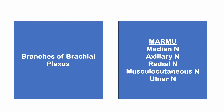Branches of brachial plexus — there are five terminal branches of the brachial plexus, remembered as MARMU: median nerve, axillary nerve, radial nerve, musculocutaneous nerve, and ulnar nerve. You need to remember these five nerves.